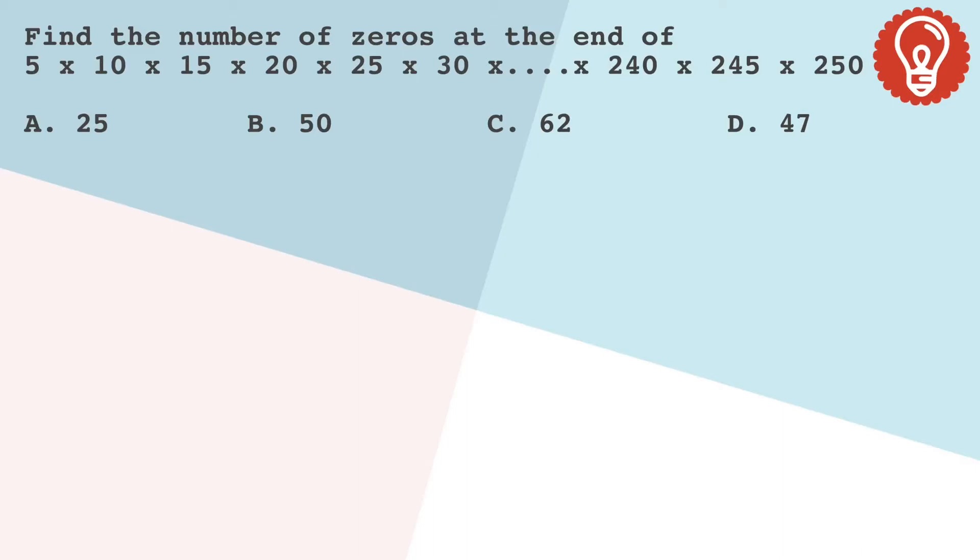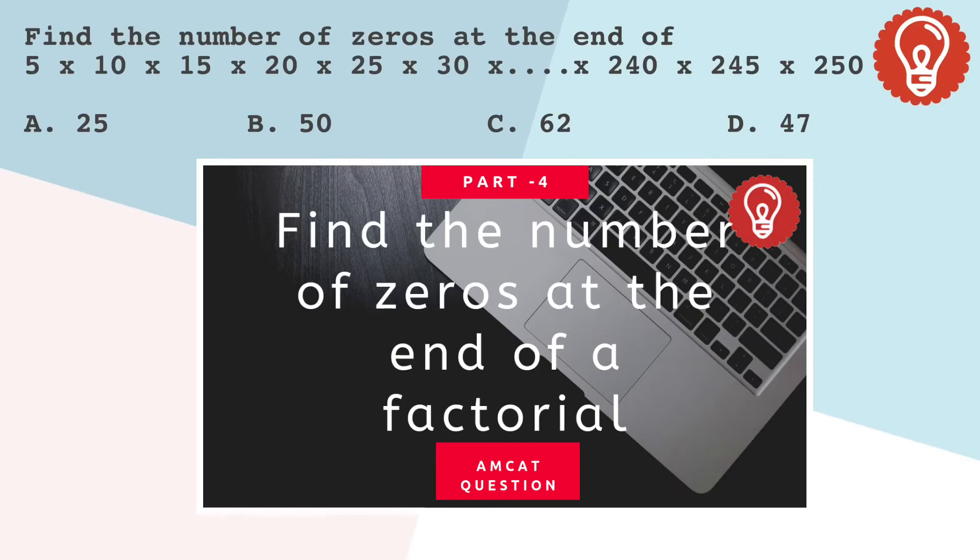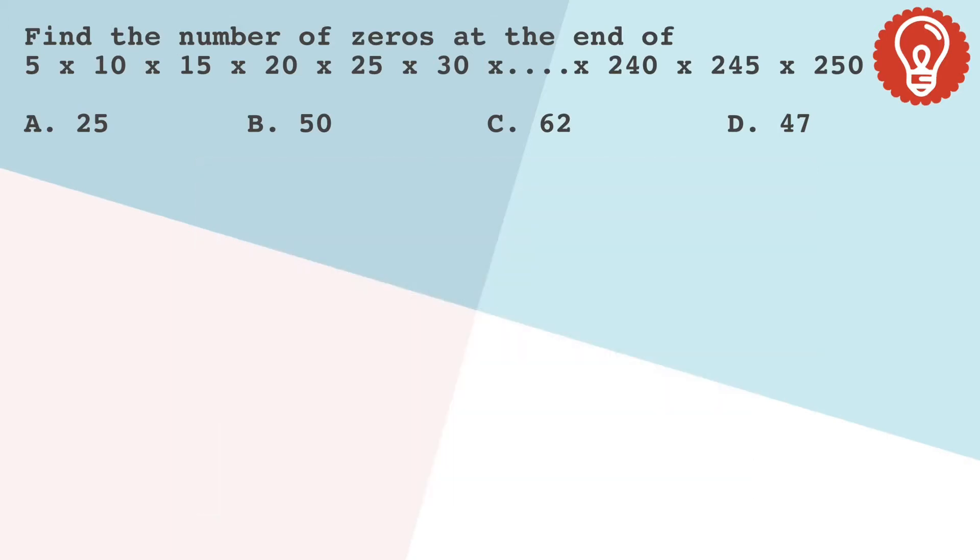Before we solve this question, it's important you understand how to find the number of zeros at the end of a factorial. If you don't know that already, then I would recommend you watch this video on the channel and then come back to this question so that you understand it better.